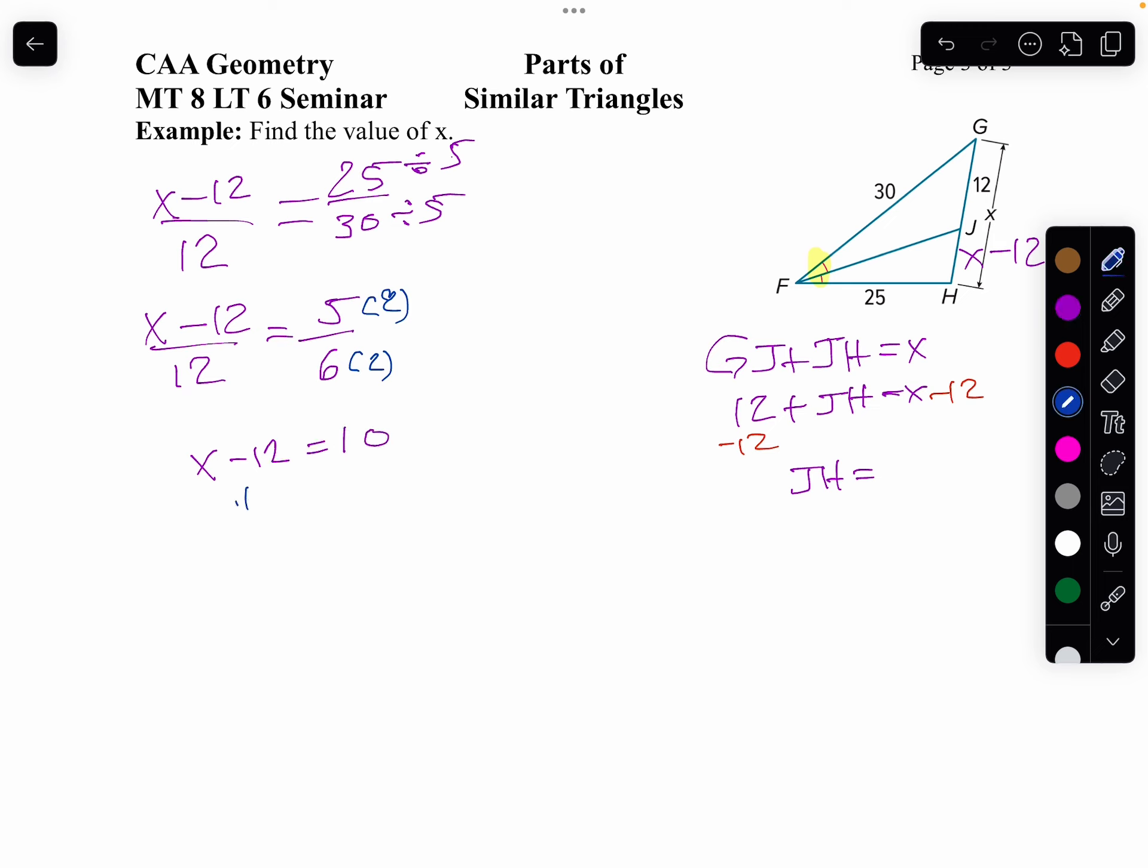Well, to solve for x, we'll add 12 to both sides. And x is 22. And that's the length of our whole shape. j to h, notice that would be 10.